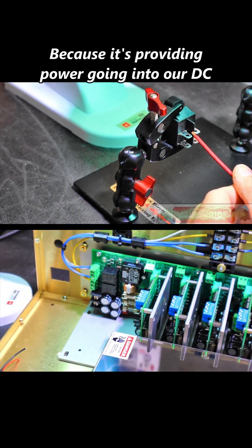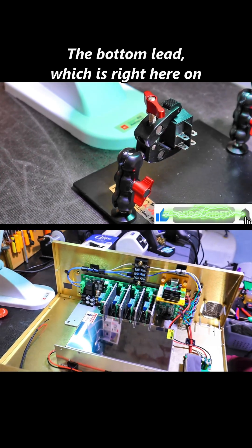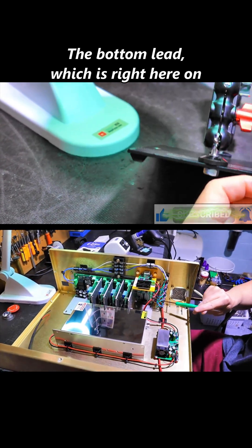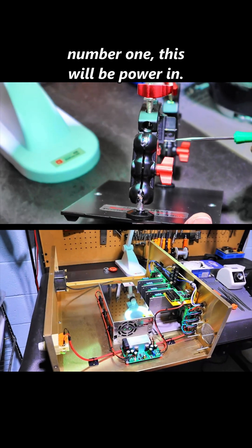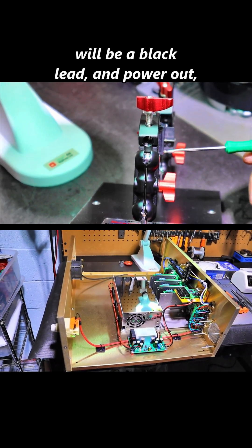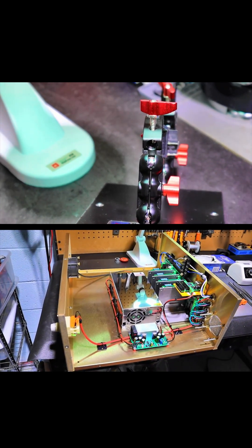Power going into our DC power supply. The bottom lead, which is right here on number 1, this will be power in. So we have power going in, which will be a black lead, and power out, which will be a red lead.